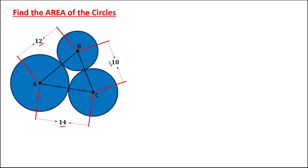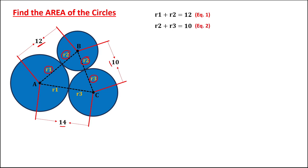first we need to find the radius for circle A, that's R1, and the radius of circle B, that's R2. So since R1 plus R2 is equal to 12 — equation number 1. Then R2 plus R3 equals 10 — equation number 2. And R1 plus R3 equals 14 — equation number 3.